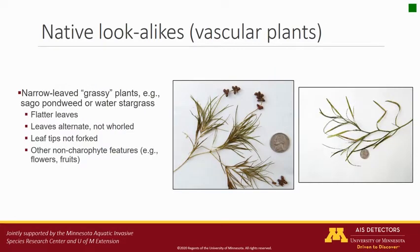It's also possible to confuse vascular plants with starry stonewort. For example, the native angiosperms sago pondweed or water star grass can also be described as grass-like. However, you will be able to tell these apart thanks to their flatter leaves, which are alternate, not whorled. In addition, their leaf tips are not forked, and you may observe reproductive parts like flowers and fruits that distinguish these species as angiosperms, not carophytes.